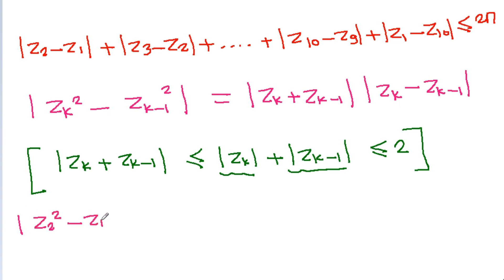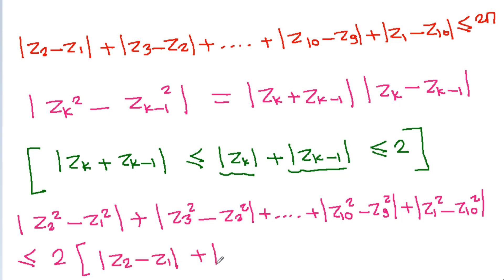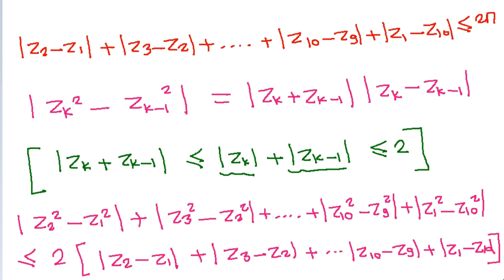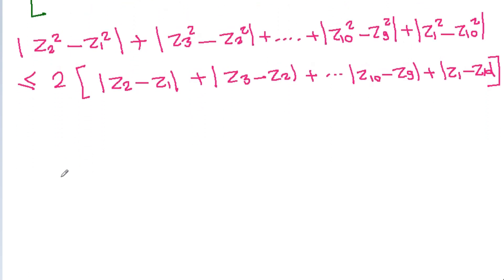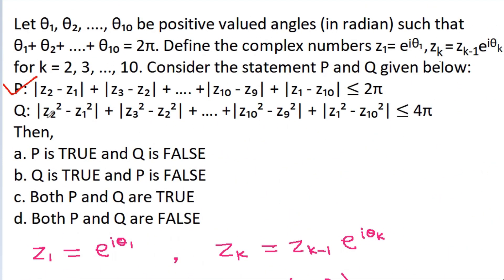Therefore, summing |g2²-g1²| + |g3²-g2²| + ... + |g10²-g9²| + |g1²-g10²| is less than or equal to 2 times (|g2-g1| + |g3-g2| + ...), and since that sum is less than or equal to 2π, the total is less than or equal to 4π. So statement Q is also true, and the correct option is option C.